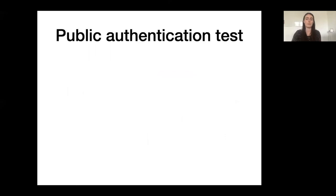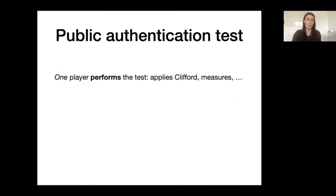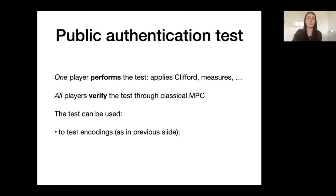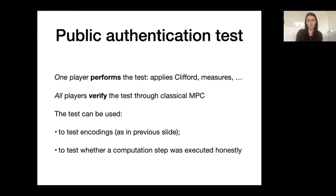To step back from the technical details: the public authentication test achieves the following. One player performs the actual test — he holds the quantum state, applies the Clifford, measures, etc. — while at the same time all players can verify the test through the classical multi-party computation. So even with only a single honest player in the group, any cheating will be detected. The authentication test is used in various parts of the protocol — for example, at the start to test whether everybody encoded honestly, and also as a variant during computations where players can show that they executed a computation step honestly.